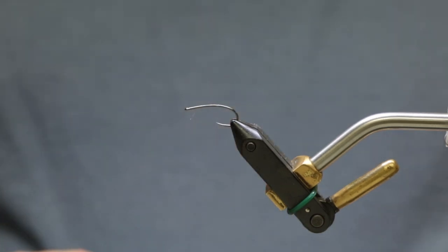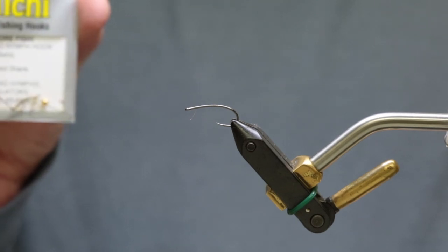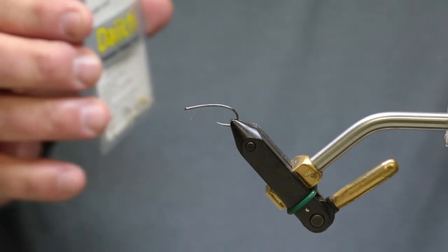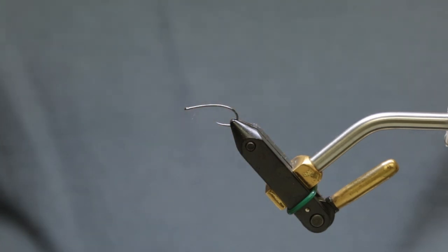The other hook that I use is the Daiichi 1260. They're like the curved stonefly hook—they're probably the best hook to use.